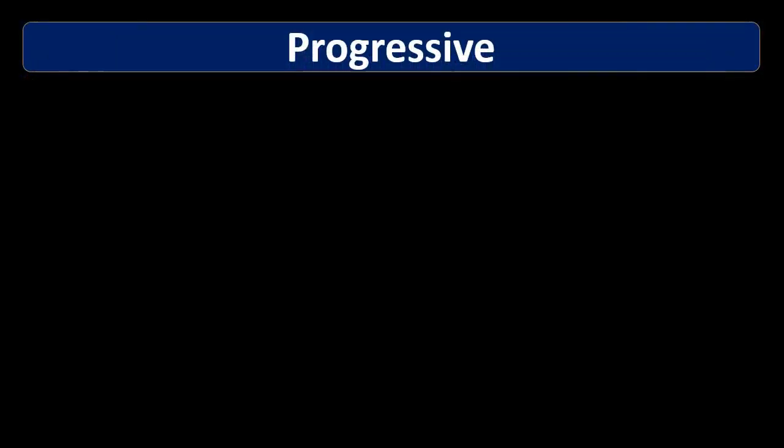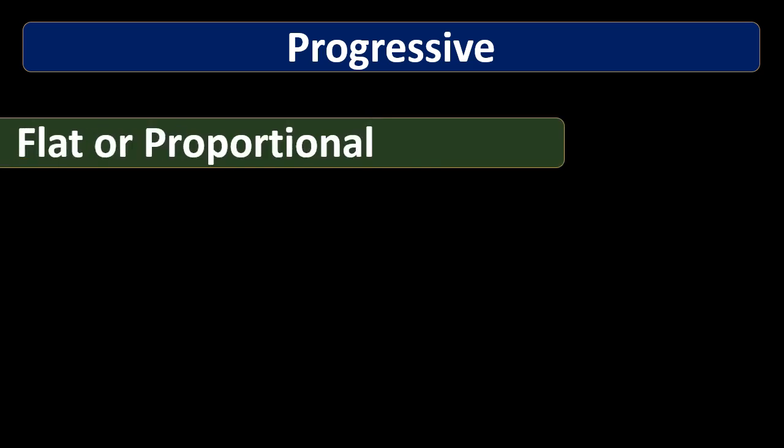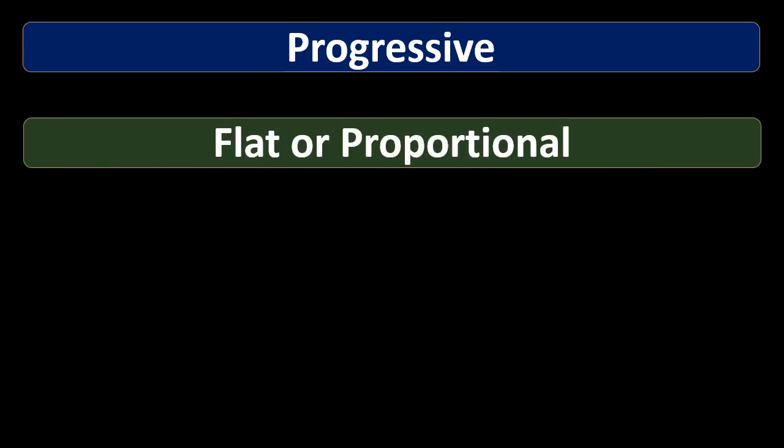The first is the progressive tax system. I list this first because this is the tax system used in the federal income tax system. We use a progressive tax system as opposed to a flat or proportional tax, which is probably what would come to mind if you just started thinking about how to design a tax system.